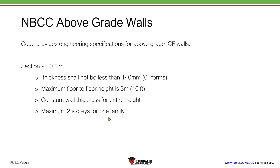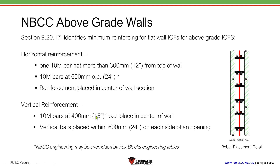For above-grade walls, horizontal reinforcement requires one 10M bar 12 inches from the top, same as the foundation, and then 10M bars at 24 inches on center — though 16 inches on center is acceptable and exceeds the code minimum. Reinforcement is placed in the center of the wall section because you don't know which side the tension is on. For vertical reinforcement, 10M bars at 16 inches on center placed in the center of the wall, with vertical bars placed within 24 inches of each side of an opening.